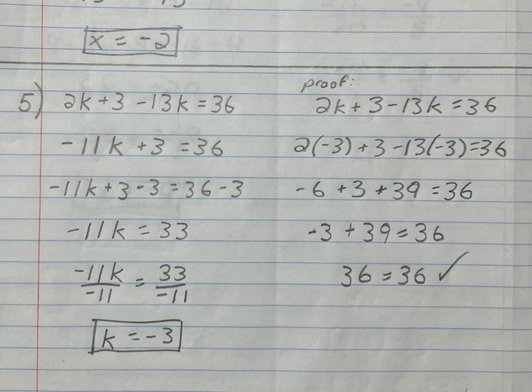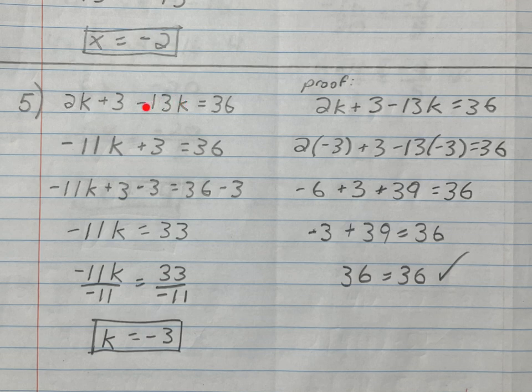Number 5. The last two problems used distributive property — this one is a combining like terms situation. The terms are 2k and -13k. If you're looking at this and seeing just 13k, don't — see it as negative 13k. That's the only way you'll really understand what it is.